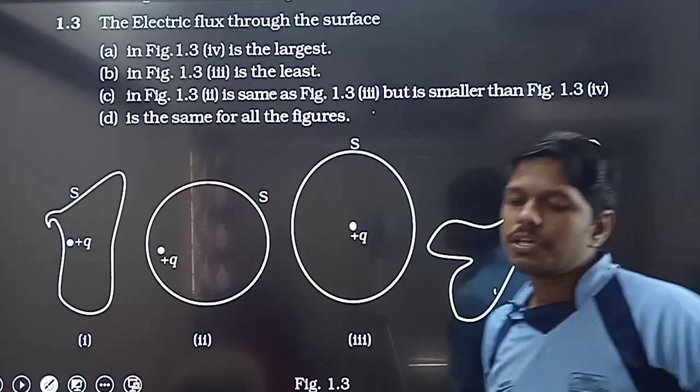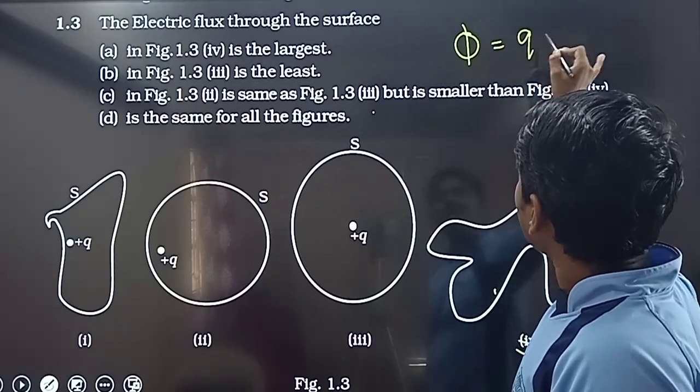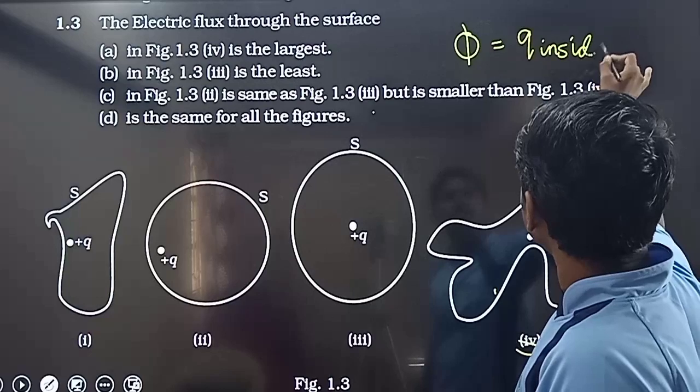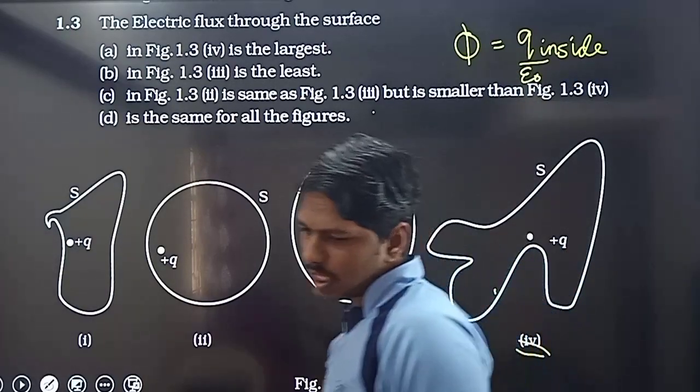But what is the definition of flux? Flux is equal to charge inside divided by epsilon not. This is the definition of flux from Gauss's law.